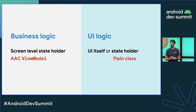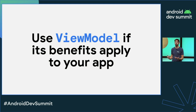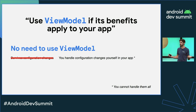Both types of state holders can be implemented with plain classes, and that's still true. The idea is that you should use ViewModels if the benefits apply to your use case. For example, you might not need ViewModels if you don't need to survive configuration changes — maybe you are in a pure Compose app and handling them yourself. Caveat: you cannot handle all configuration changes.